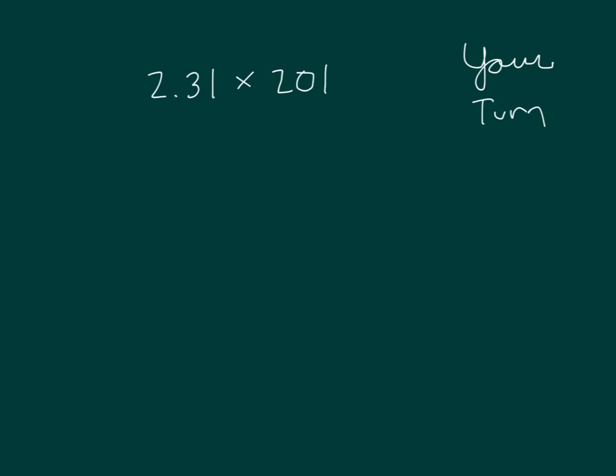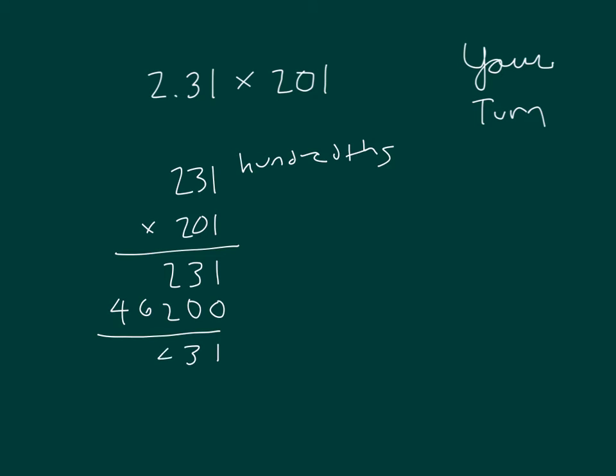Show me standard algorithm to solve this problem. Pause the video while you do your work. Hopefully you wrote it out into standard form after you did your work. Place 2 zeros. 2 times 1 is 2, 2 times 3 is 6, and 2 times 2 is 4. Which equals 464.31. Check over your work.